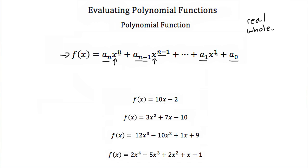Here are several examples of polynomial functions. We have f(x) = 10x − 2, and you can think of this as x to the first power. Because this is x to the first power, we call this a linear function.